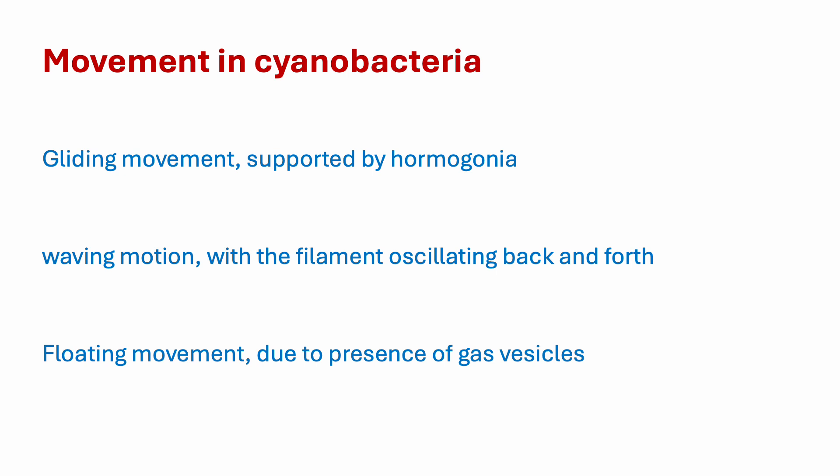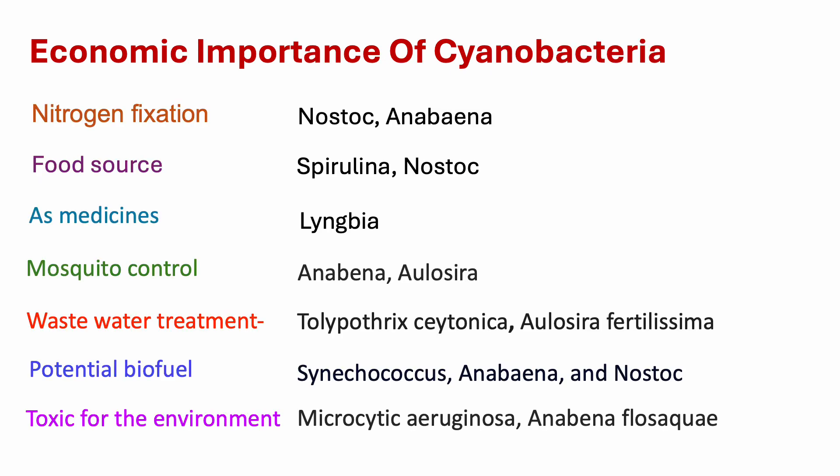Different types of movements in cyanobacterial cells: the first is gliding movement, supported by hormogonia. The next is waving motion, with the filament oscillating back and forth. The third is floating movement, due to the presence of gas vesicles.